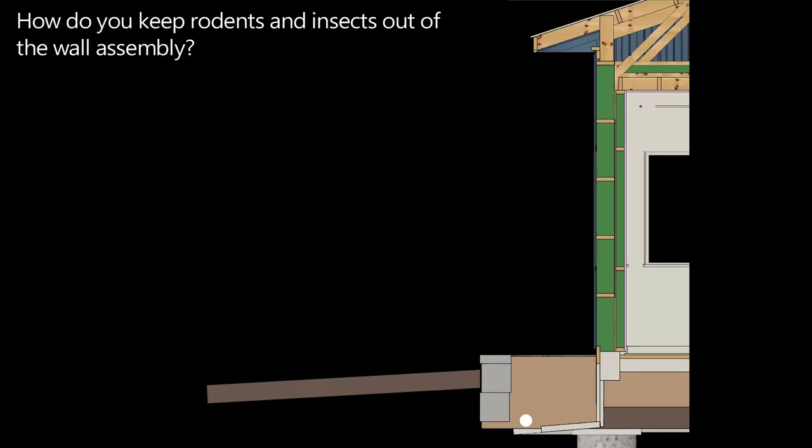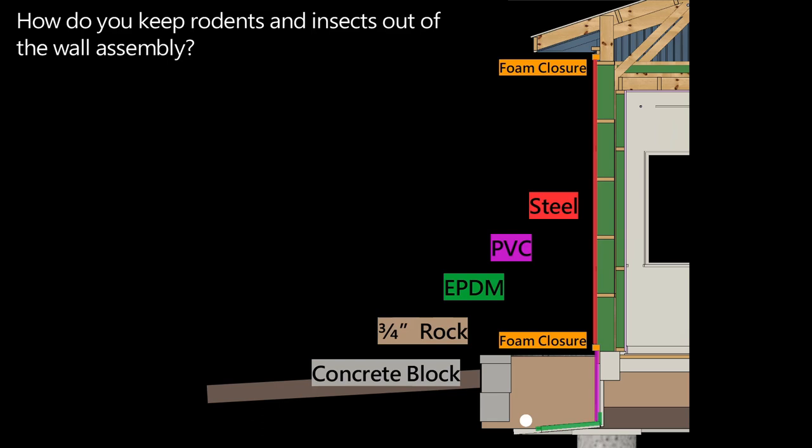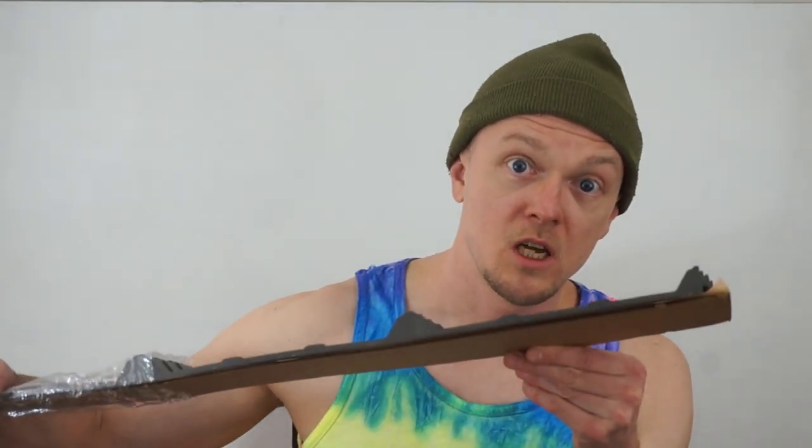How do you keep rodents and insects out of the wall assembly? Looking at the section, there are several shields: first is the concrete block, next is the three-quarter inch rock that the concrete block is holding, then EPDM membrane on the lower insulation, PVC sheet on the upper insulation. Getting up into the steel of the wall assembly, there is a J channel, and then the ends of the steel have a foam closure strip sitting on top of that six millimeter corrugated plastic. That should be pretty effective at keeping pests out.